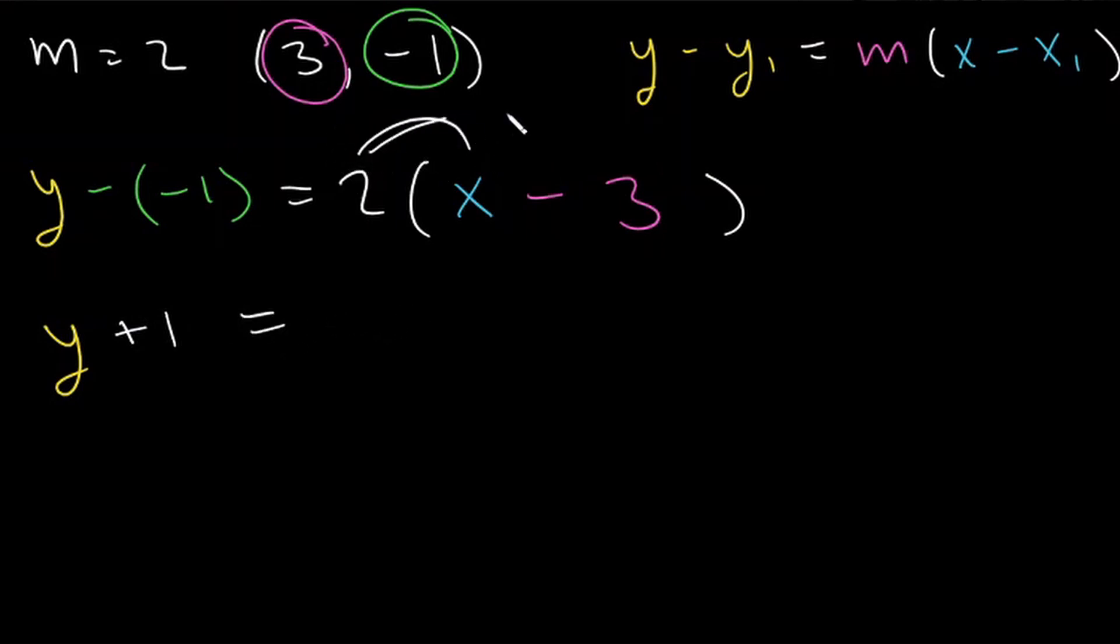On this side, we're going to have y plus 1 is equal to... if we distribute the 2 over here, it will be 2 times x is 2x. 2 times negative 3 is negative 6. And now let's put this in slope-intercept form. So let's solve for y. We're going to subtract 1. 2x negative 6 minus 1 is negative 7.